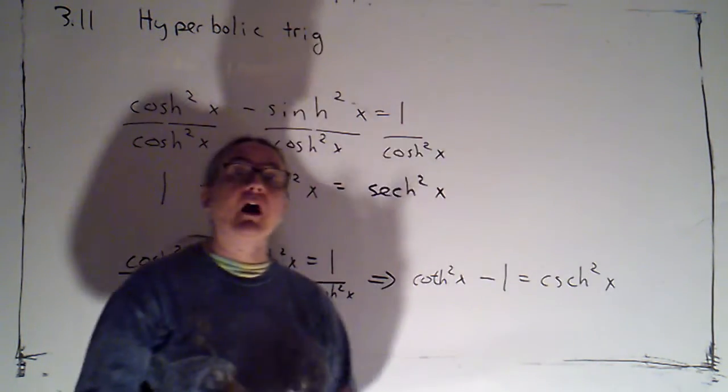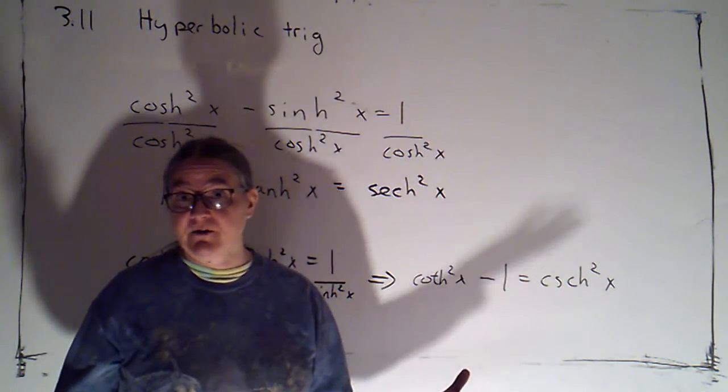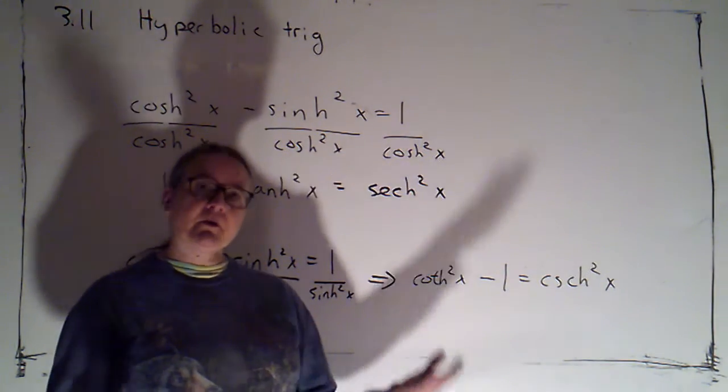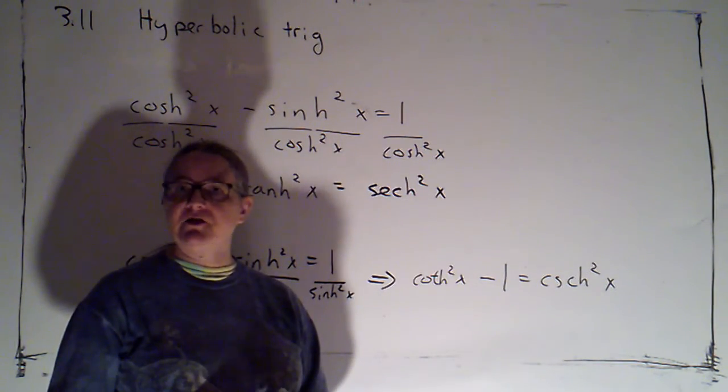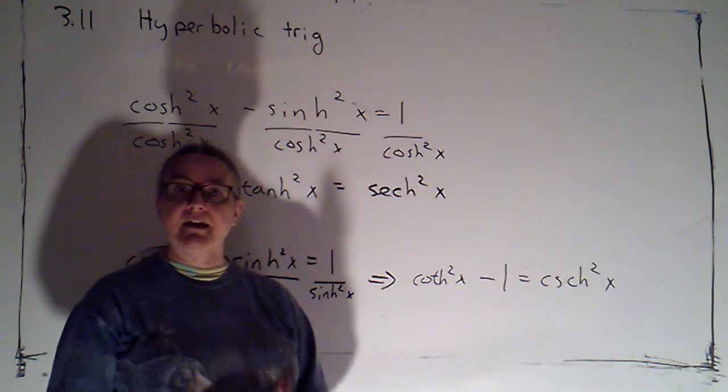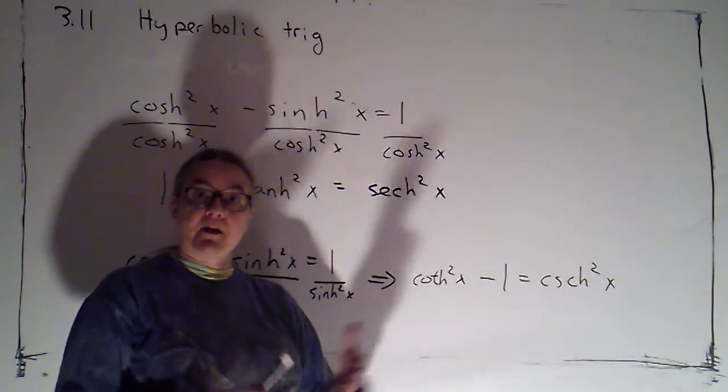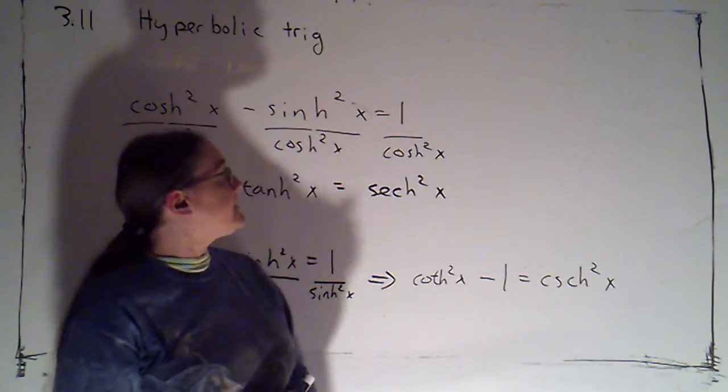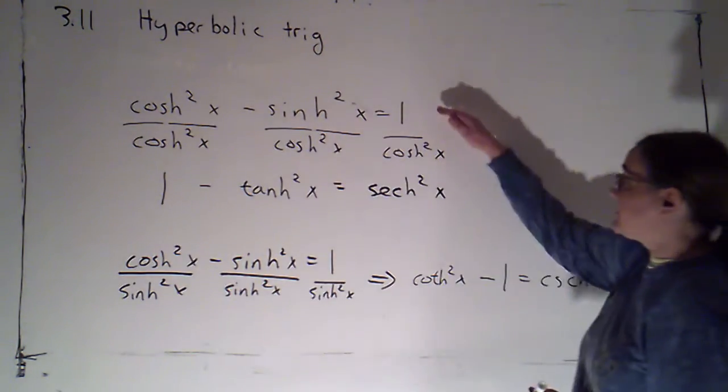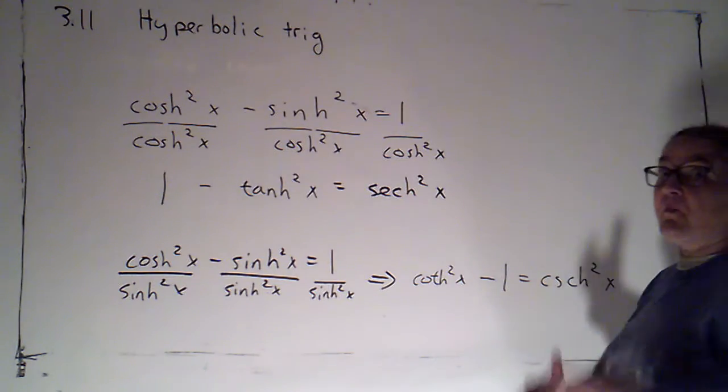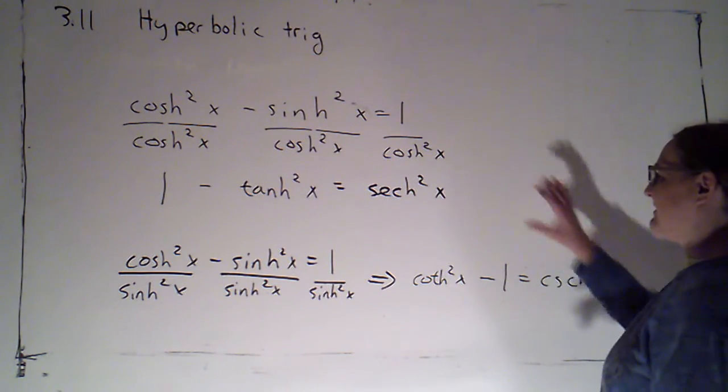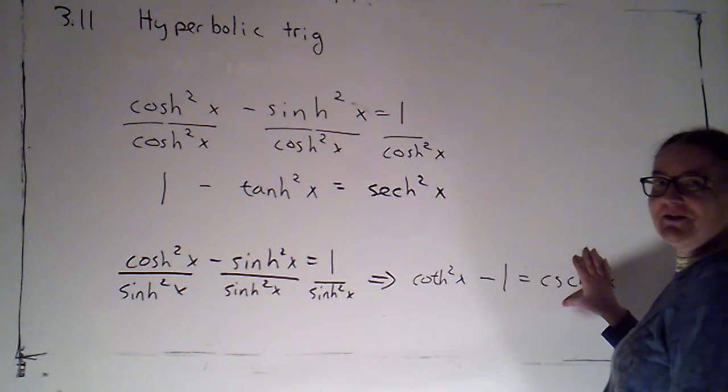What you're responsible for are the ones that are essentially part of our definitions, the quotient and reciprocal identities. You're responsible for knowing that cosh is even and sinh is odd and being able to then figure out whether the other hyperbolic trig functions are even or odd. And you're responsible for knowing these three identities, although my interpretation of knowing is know that one and know how to use it to get the other two, if you need to use them.